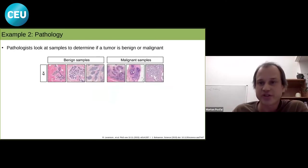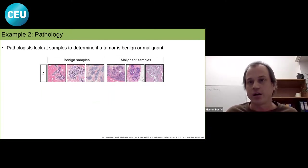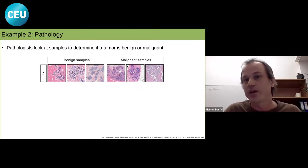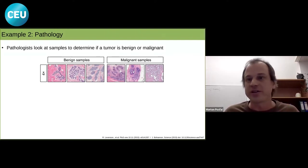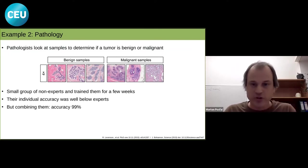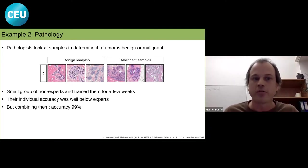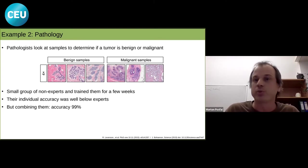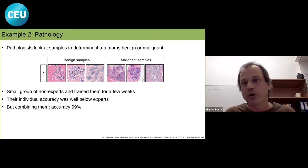A second example comes from pathology. Pathologists look at samples and make diagnoses — for example, deciding whether a tumor is benign or malignant. It's a very hard job requiring rigorous training, sometimes called more art than science. Researchers at UC Davis took a small group of non-experts, trained them for a few weeks to differentiate between benign and malignant samples. Their individual accuracy was well below experts, but when their guesses were pooled together, their accuracy rose to 99%, on par with expert pathologists.